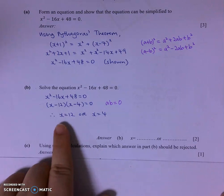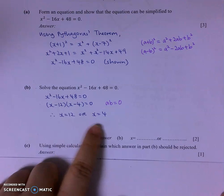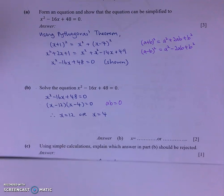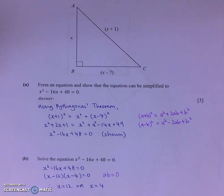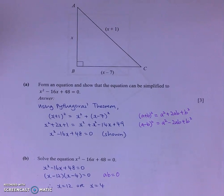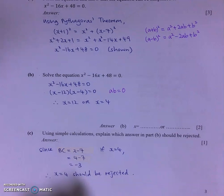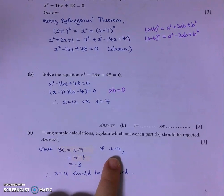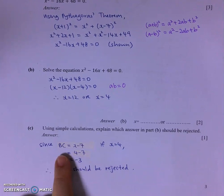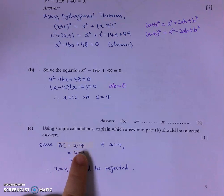So I would have to do a quick check by substituting the values of X into the original triangle. So if I were to substitute X equals to 4 when BC is X minus 7,